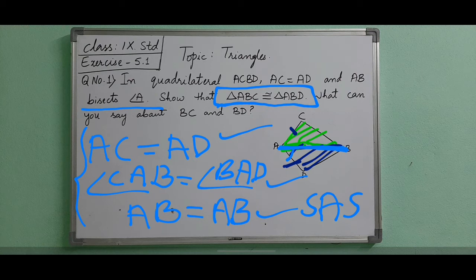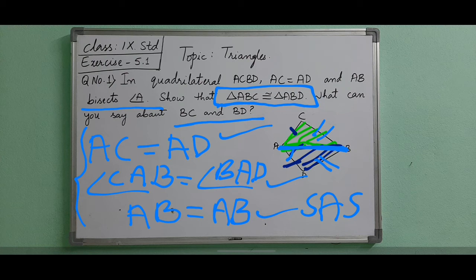This gives us side, angle, and side — so it satisfies the SAS congruence rule. By SAS congruence, triangle ABC is congruent to triangle ABD. Therefore, BC is equal to BD, because corresponding parts of congruent triangles — that is CPCT — are equal.